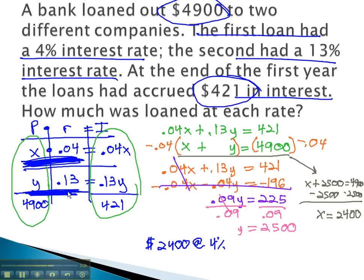y is the amount at 13%. We have 2500 dollars that is loaned out at 13%. And that completes our problem.